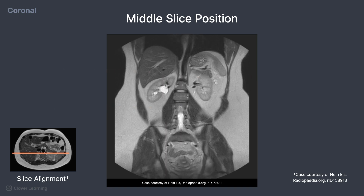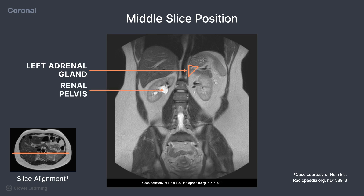Continuing posteriorly, a very small structure is the left adrenal gland located superior to the kidney. This appears like a little triangle on top of the kidney. The right renal pelvis can be seen and appears bright due to the T2 weighting of the image.